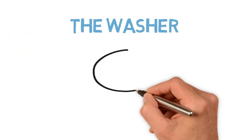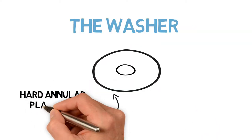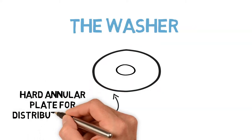The last parts are the washers. These are annular plates typically made of a very stiff material, which help spread the load acting on the bolt head and nut over a larger area.